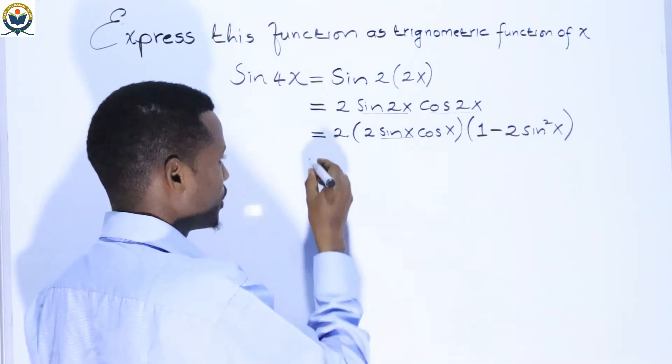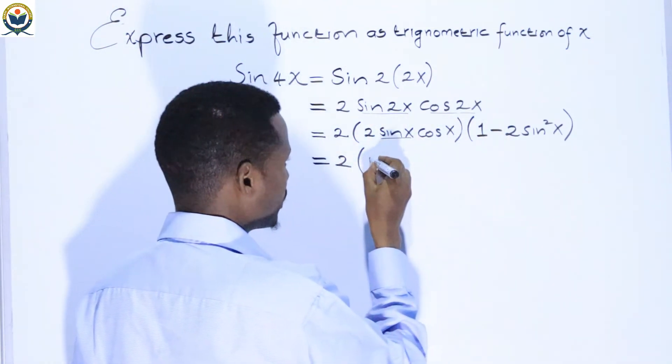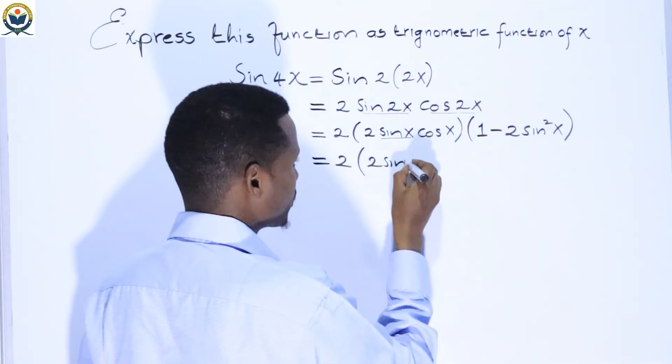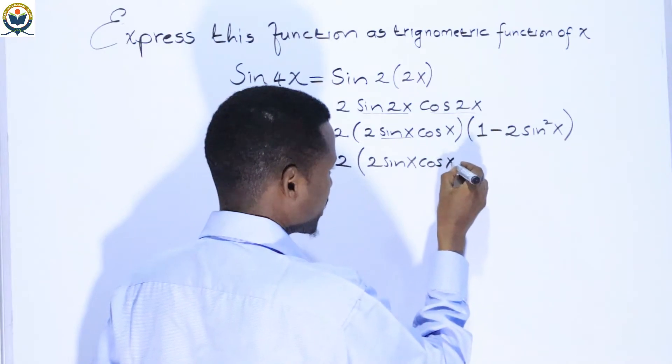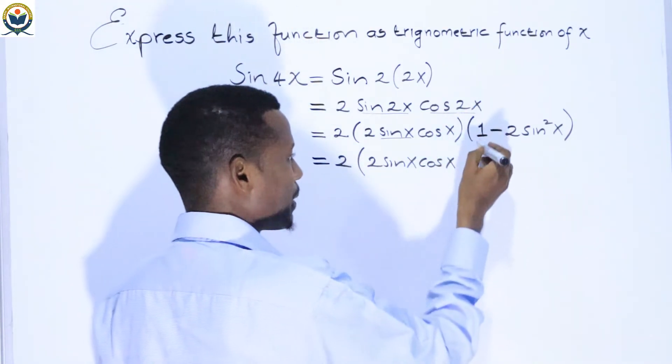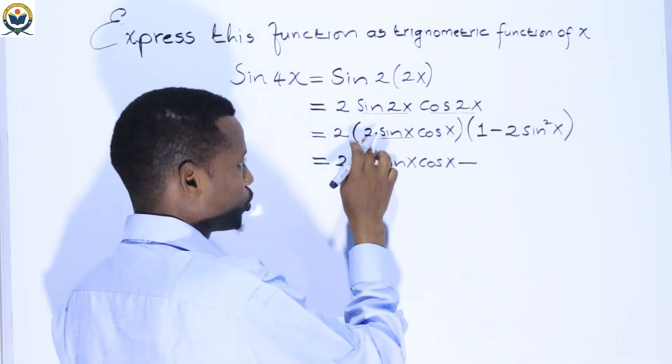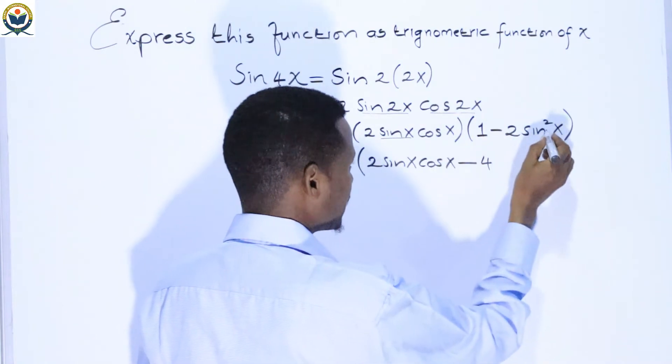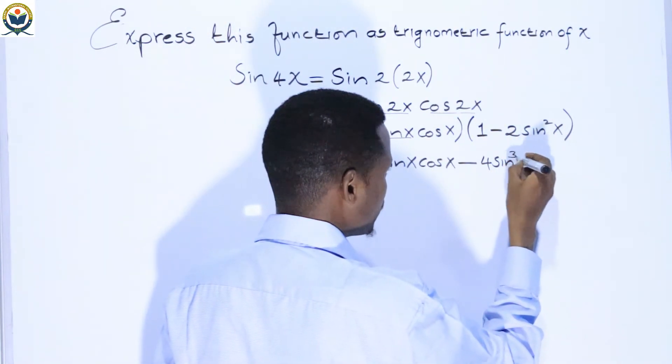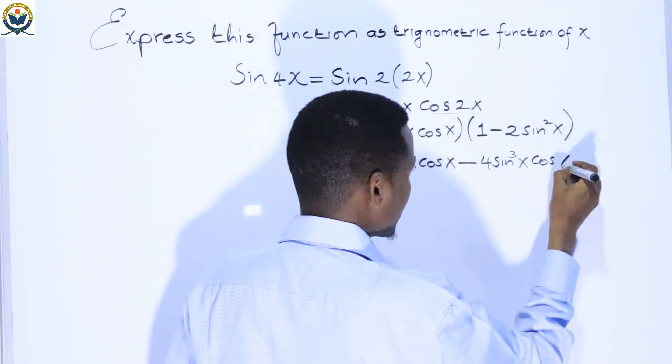2 times this equals: 2 sin(x) cos(x) times (1 - 2sin²(x)). Multiplying through: 2 times 2 gives 4 sin(x) cos(x) minus 4 sin³(x) cos(x).